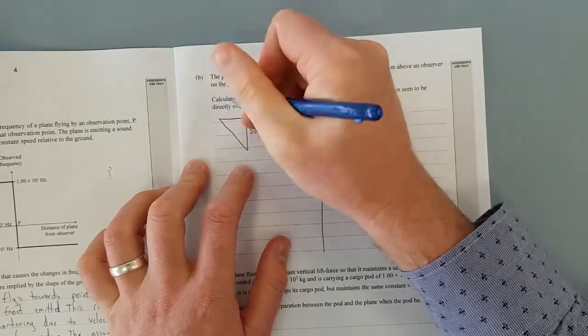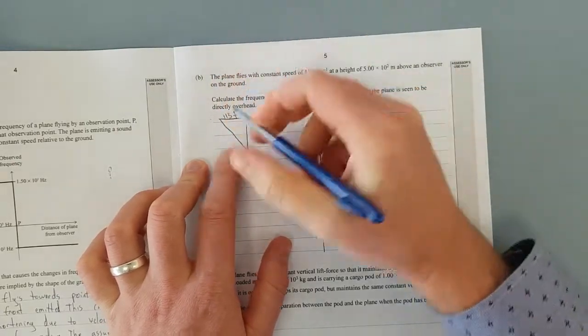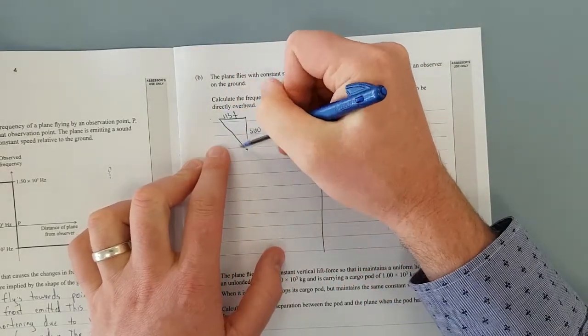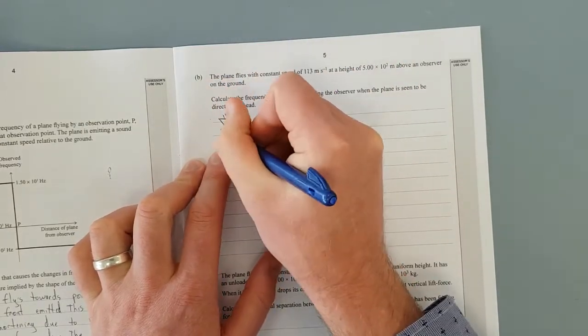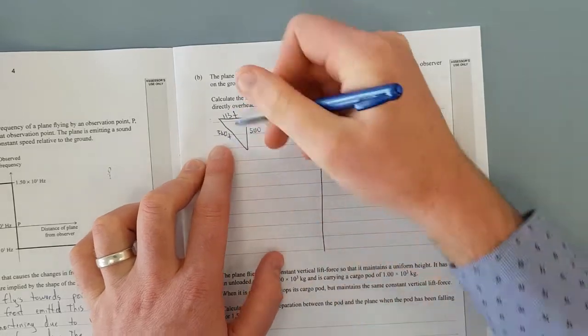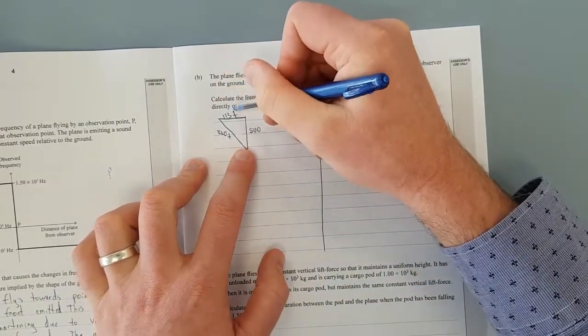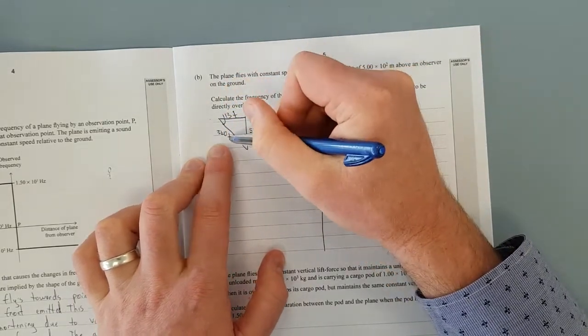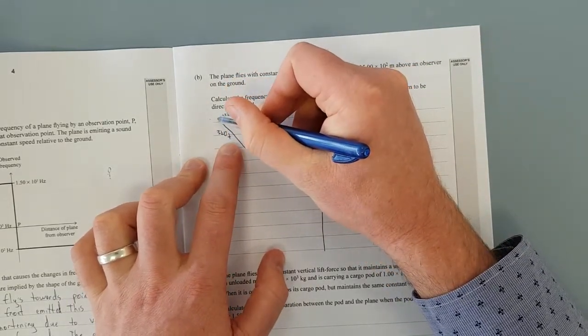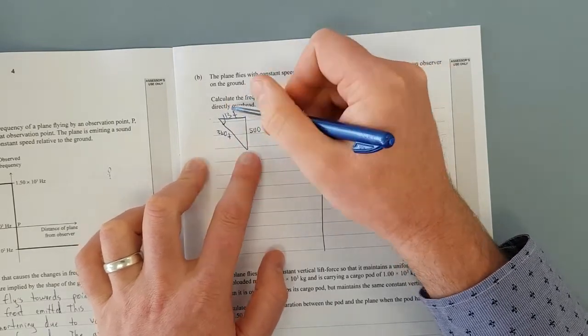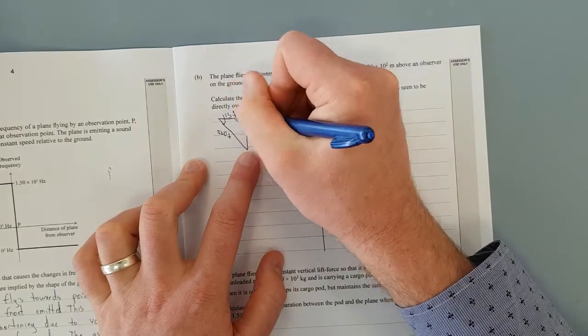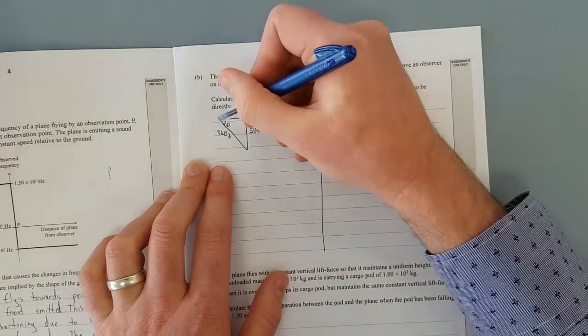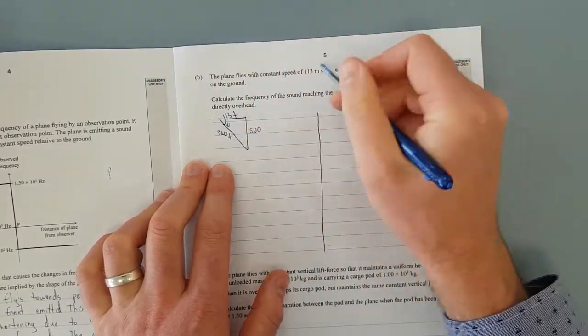And the plane, this distance here is going to be 113 times T because it's velocity times time gives you distance. And the time, the distance here is going to be 340 times the time. So this distance and this distance when these times are equal you'll get the angle. So in other words how long it takes the sound to get from here to here and from here to here when these are equal we'll find out what this angle is because really we want to find this component of velocity of the 113.